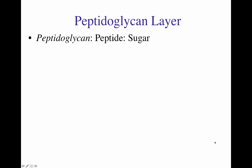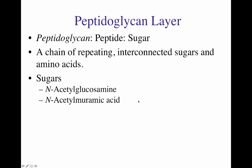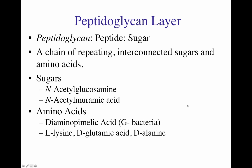Peptidoglycan, as the word states, is a combination of peptides and sugars. It is a chain of repeating interconnected sugars and amino acids. The sugars are two: N-acetylglucosamine and N-acetylmuramic acid — the two molecules mostly involved in the bacterial peptidoglycan layer. The amino acids are special: gram-negative bacteria has one particular amino acid, diaminopimelic acid, that is not found in gram-positive bacteria.